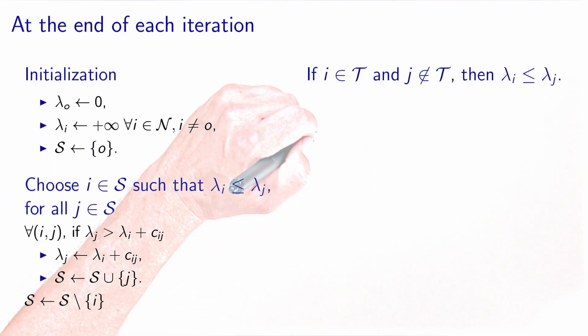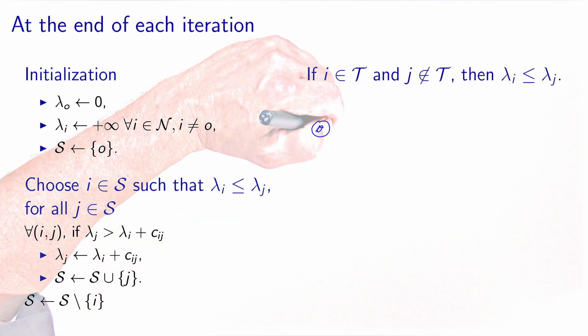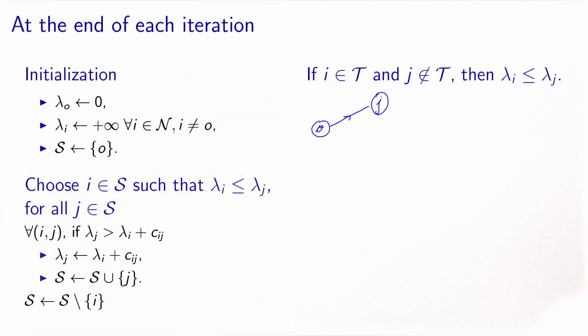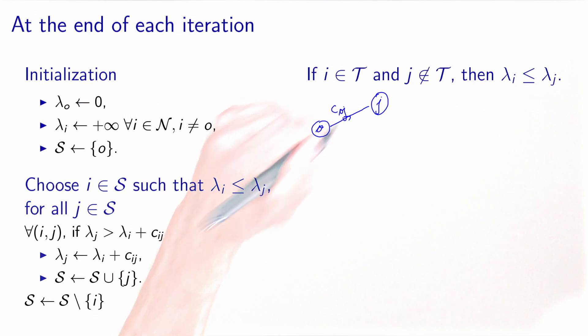At the first iteration, O is the only node which is treated. It is treated by looking at an outgoing arc that goes to, let's say, J. This cost is C_OJ. We know that lambda O is equal to zero by initialization. And during the first iteration, the label of J, which was plus infinity, will become C_OJ.